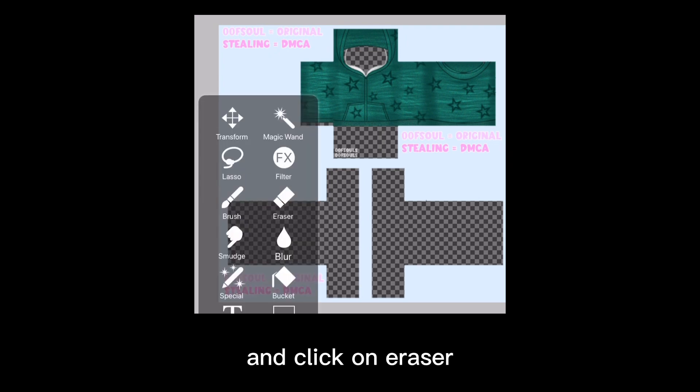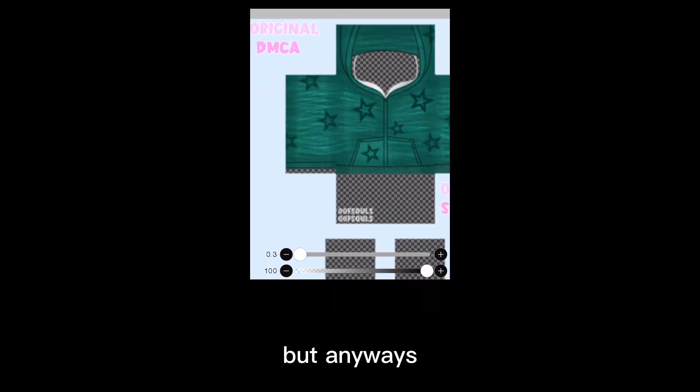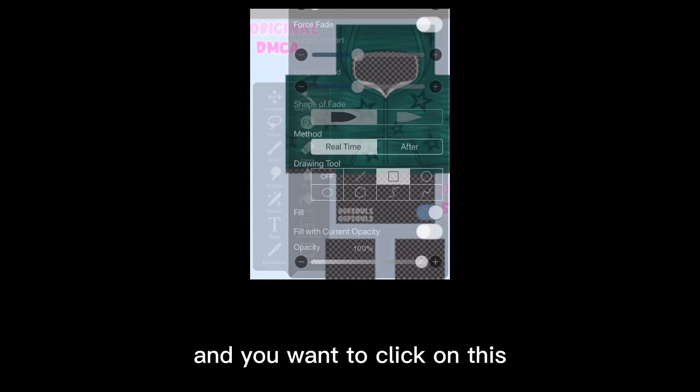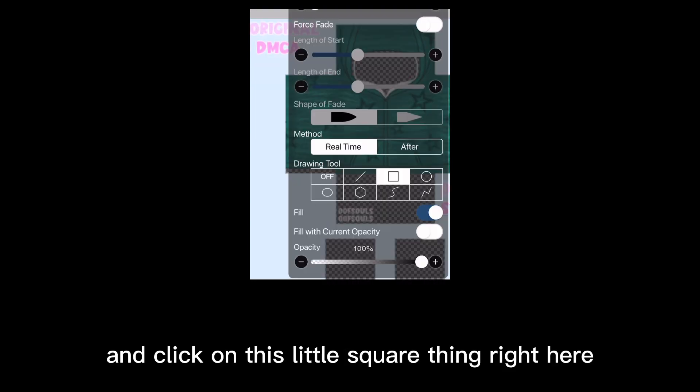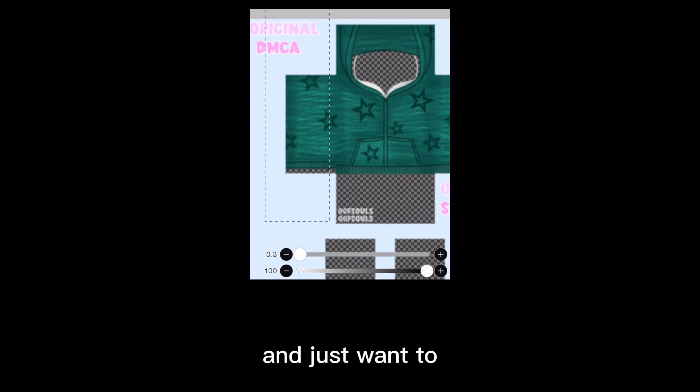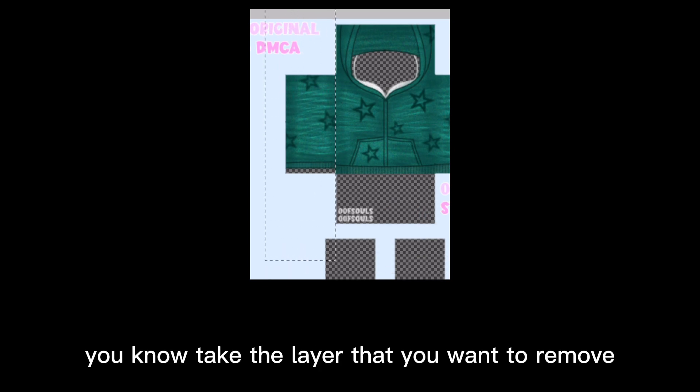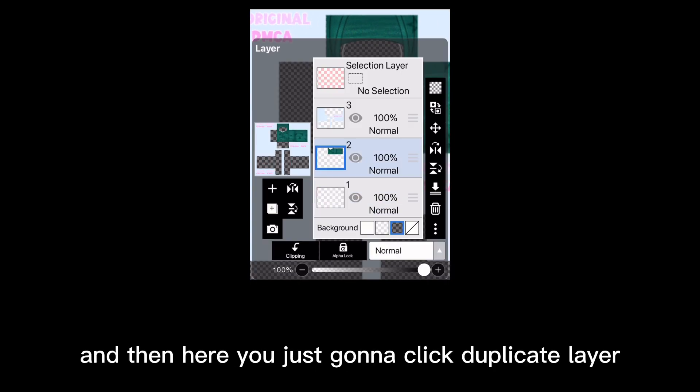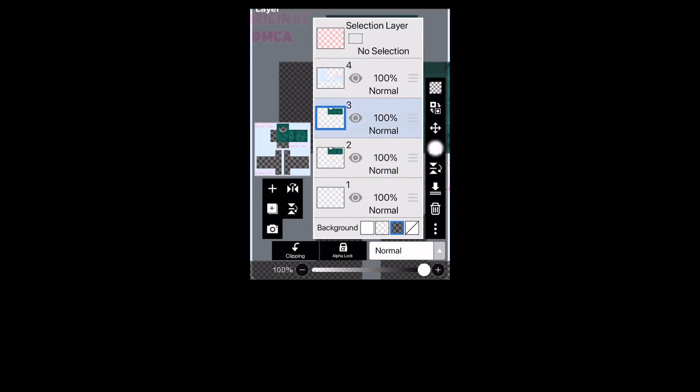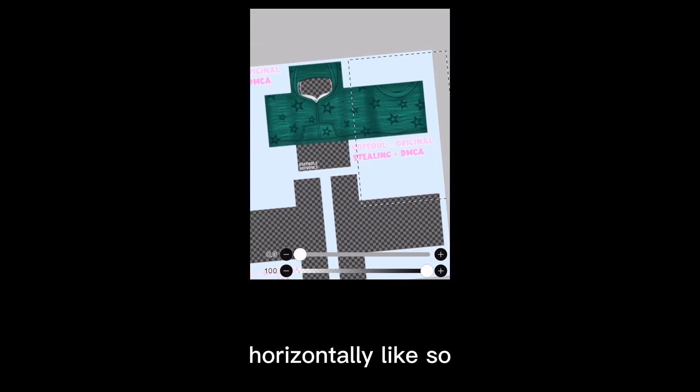First thing you want to do is upload the layer underneath your template layer. Now go to this little brush tool right here and click on eraser. You want to go to this little eraser thing and click on this drawing tool and click on this little square thing. You want to take the layer that you want to remove and just remove it like so. Then you're going to click duplicate layer, use this little tool to invert the layer horizontally like so.